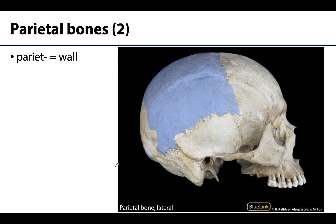Moving more posterior-laterally, we have the paired parietal bones — a right and a left. Here we can only see the right parietal bone in this lateral view. You don't need to distinguish right from left in a practical setting. The parietal bones form the walls of the neurocranium; they are very flat and fairly thin bones, particularly compared to the occipital bone.